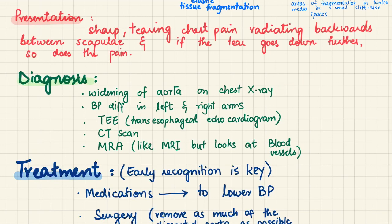For diagnosis, we can observe widening of the aorta on chest X-ray. Blood pressure will differ between the left and right arms. Transesophageal echocardiography — where the device is inserted into the esophagus for a better view of the aorta — is useful, as are CT scan and MRA, which visualizes blood vessels like an MRI.